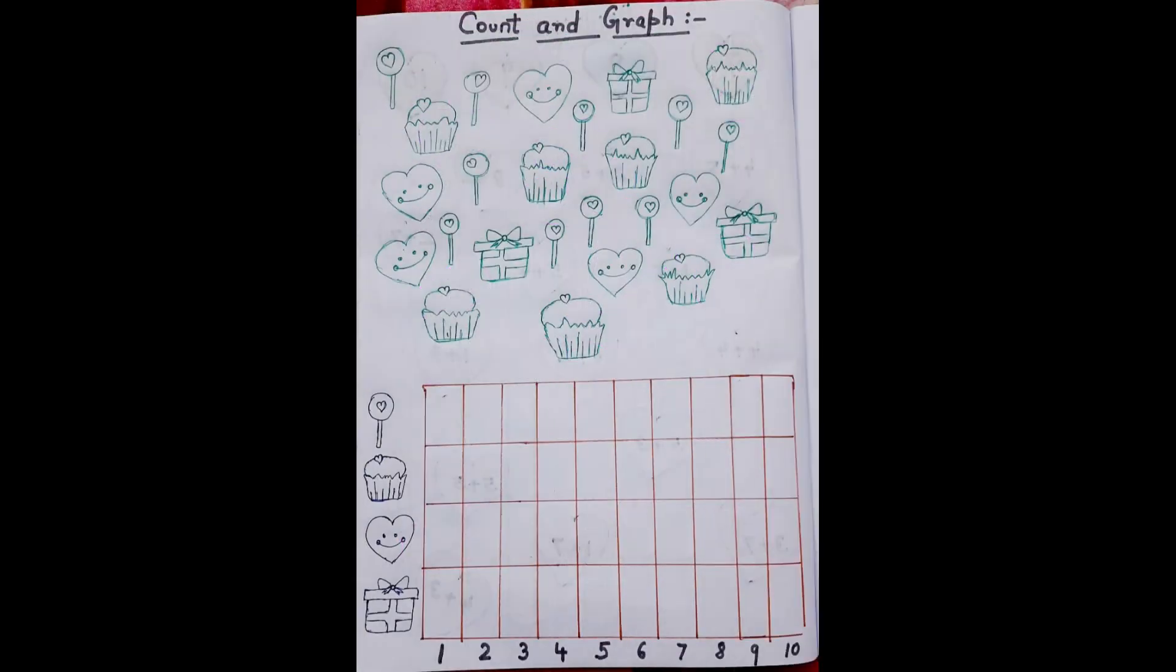In the fourth worksheet, the kid needs to color the number of objects given and complete the graph by coloring them. For example, there are three gift boxes given, so the kid will count and color the three graph boxes of gift given below.